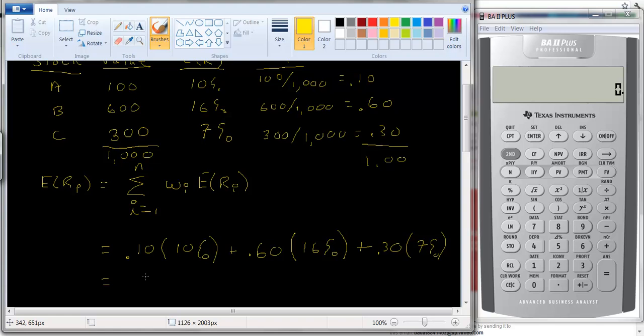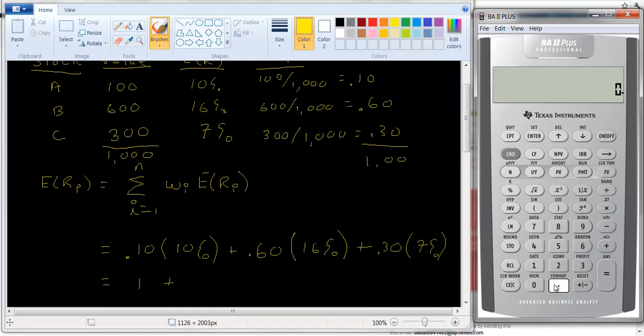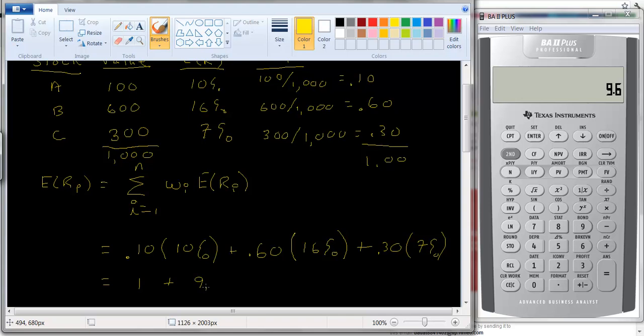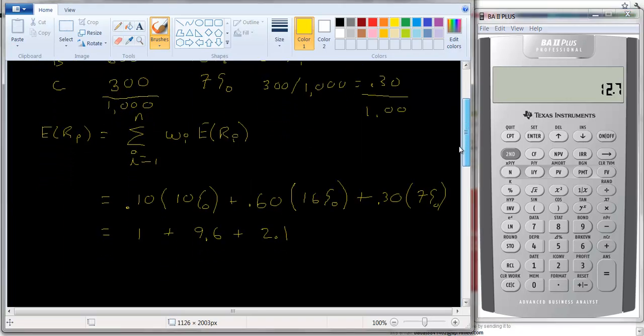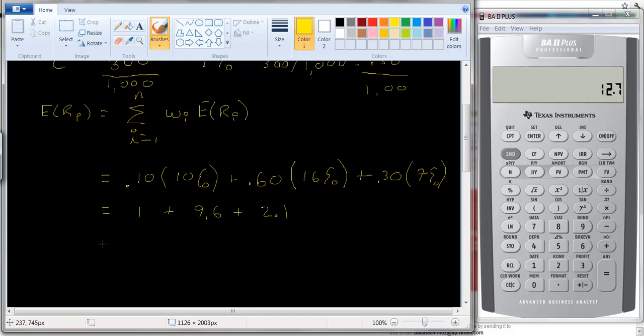So let's see. 10% of 10 is 1. Let's use the calculator. 16% times .6 is 9.6. And 30% of 7 should be 2.1. So let's just add that up. Plus 1 and then plus 2.1. And so we have an expected return for this portfolio of 12.7%.